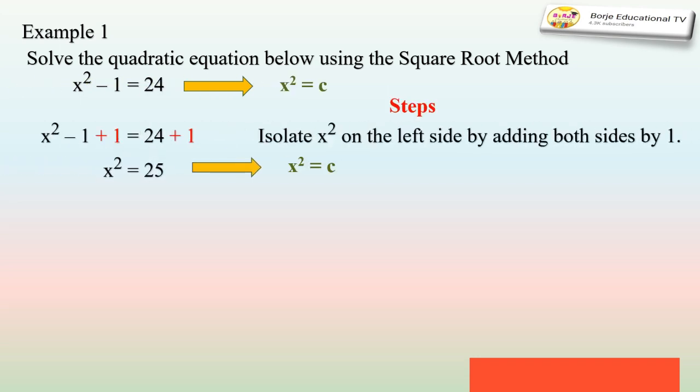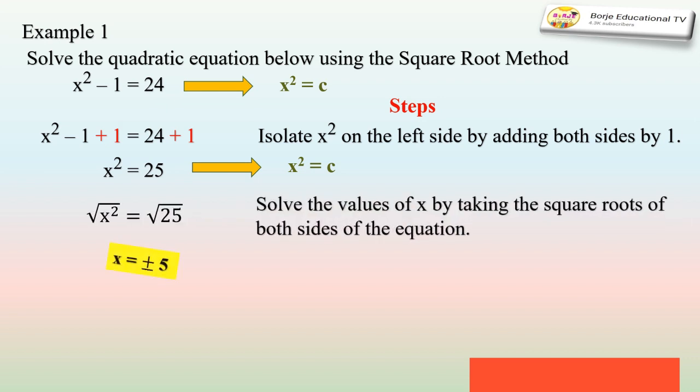Let's solve x² - 1 = 24 using the square root method. First, we isolate x² on the left side. We add 1 to both sides of the equation to eliminate negative 1 on the left side. Combining like terms gives us x² = 25, which is in the form x² = c. Then we solve for x by taking the square roots of both sides.